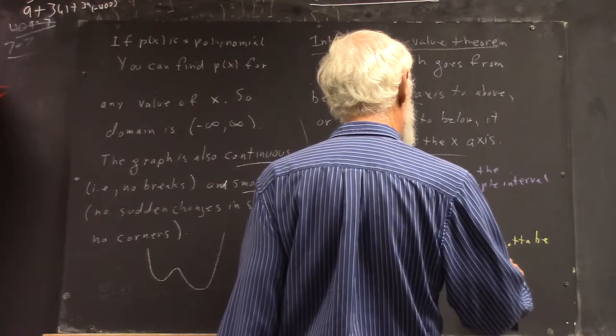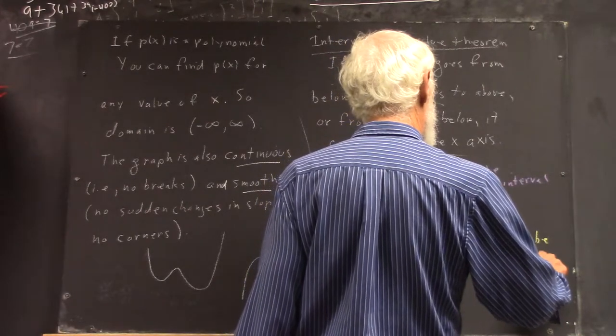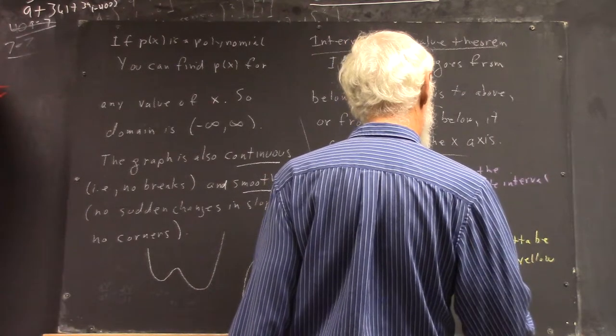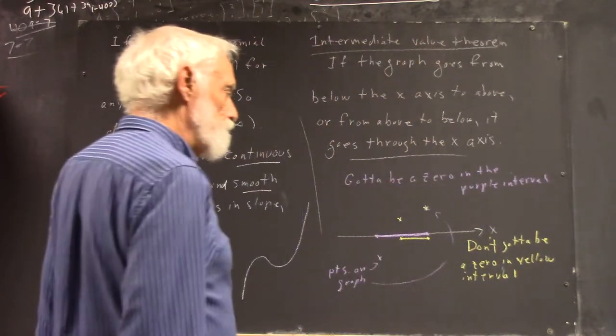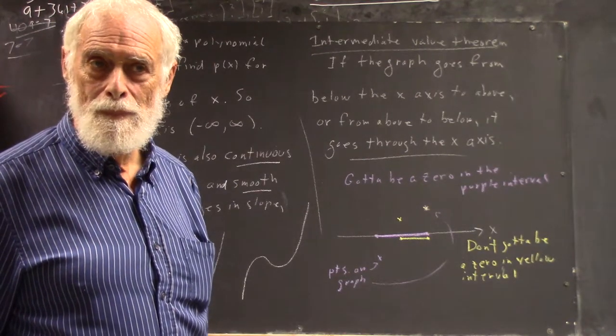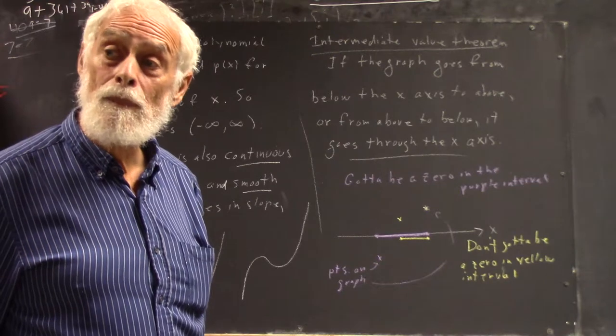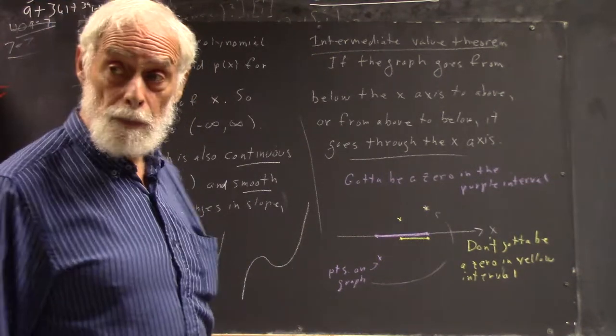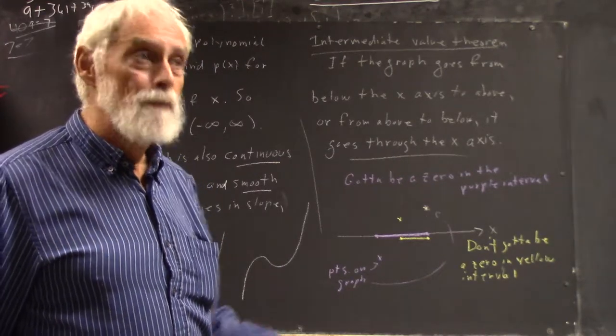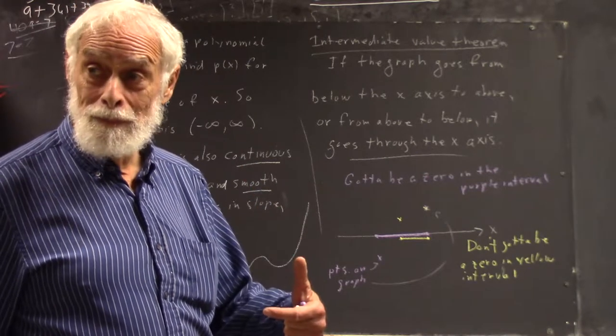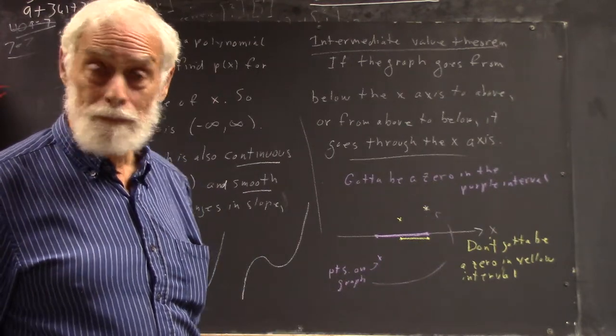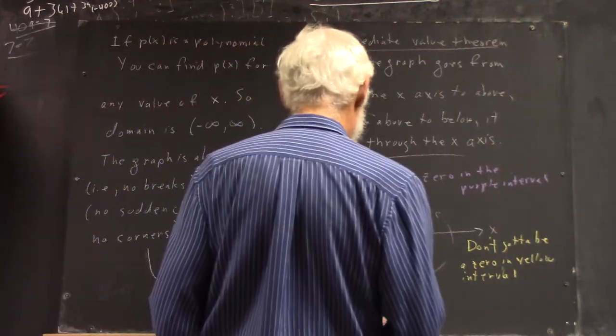So doesn't got to be a zero. But where does it have to have a zero? In the purple. Well, we know it's got one in the purple. Can we say more than that? To the left side of the yellow. Yeah, well, and we can say, but it's then got to have one in the part of the purple interval that's left when they take away the yellow interval. So I'm going to say that a little more compactly.